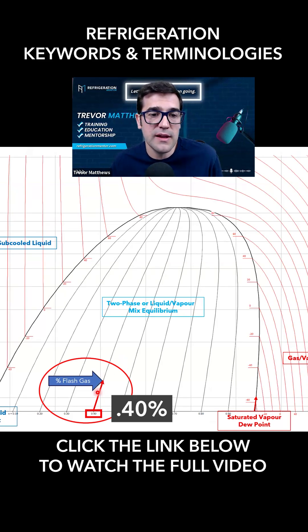This line right here, it might be hard for some of you to see, but it says 0.4. That means there's 40% flash gas right about here.